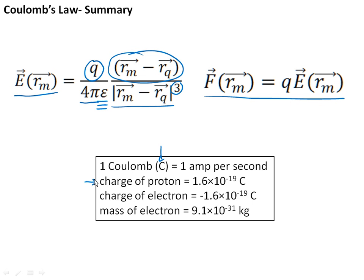It turns out that the fundamental particles, protons and electrons of atoms that carry charge have very, very small charges, something like 1.6 times 10 to the 19 coulombs for a proton and negative 1.6 times 10 to the minus 19 coulombs for an electron. Protons have positive charge, electrons have negative charge. We also need to remember that the mass of electrons are also very small. These masses are very tiny as well.